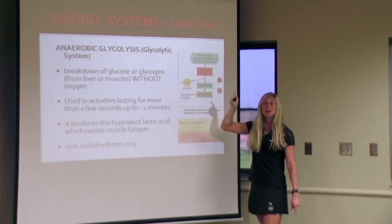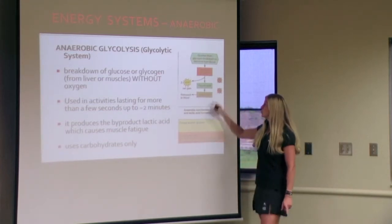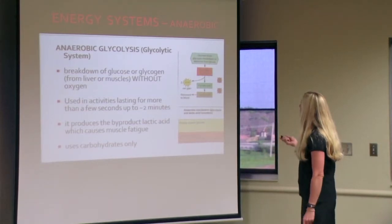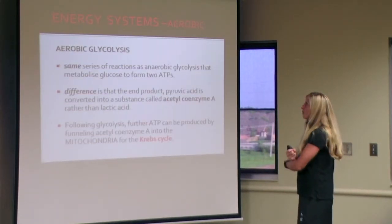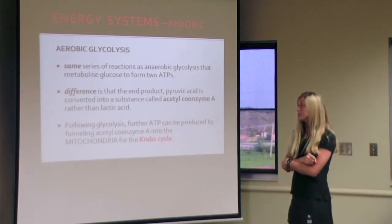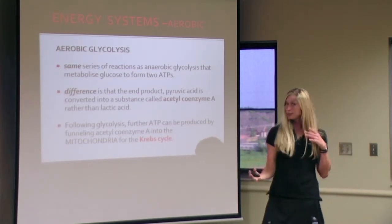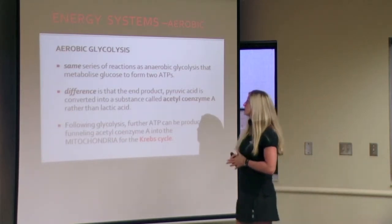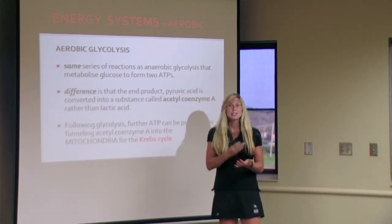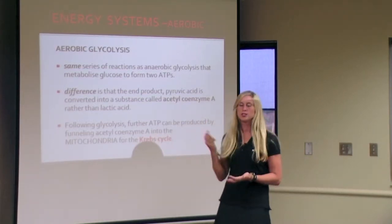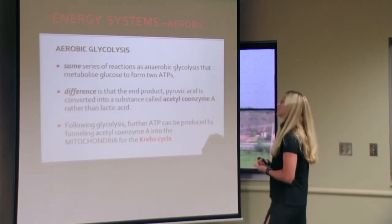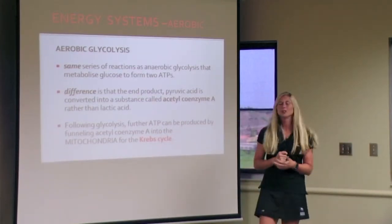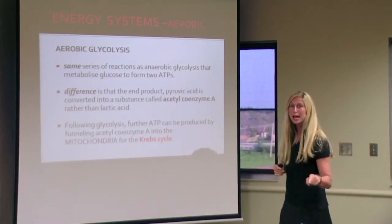The difference between anaerobic and aerobic glycolysis is what happens to the pyruvic acid. In aerobic glycolysis, it's the same series of reactions — breaking down glucose and glycogen to get ATP — but the difference is that pyruvic acid is converted into a substance called acetyl-CoA instead of lactic acid.